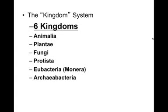Another way of organizing organisms is using the Six Kingdoms system developed by Carolus Linnaeus in the 1700s. We'll learn more about his classification system later this year.